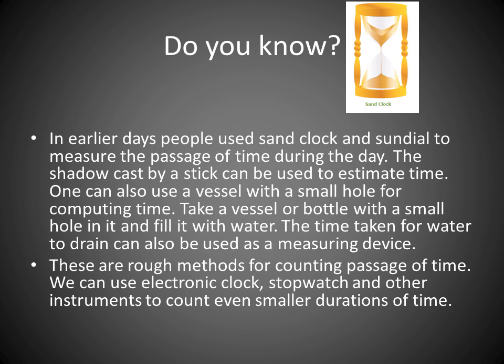In earlier days, people used sand and sundials to measure the passage of time during the day. A shadow cast by a stick can be used to estimate time. One can also use a vessel with a small hole — fill it with water, and the time taken for water to drain can be used as a measuring device. These are rough methods for counting the passage of time. We can use an electronic clock, stopwatch, and other instruments to count even smaller durations of time.